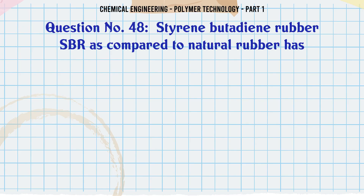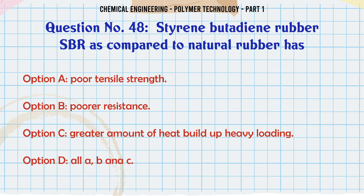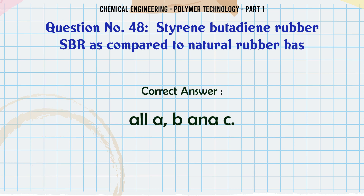Styrene butadiene rubber (SBR) as compared to natural rubber has: A. Poor tensile strength, B. Poorer resilience, C. Greater amount of heat build-up under heavy loading, D. All A, B, and C. The correct answer is All A, B, and C.